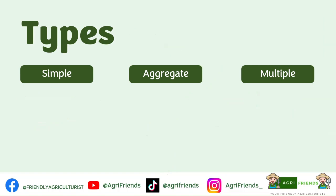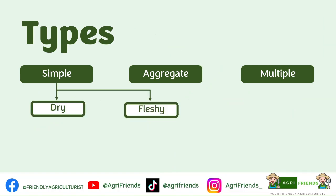In general, there are three types of fruits: the simple, aggregate, and multiple. The simple fruit is further classified into dry or fleshy, while the dry can be further classified as dehiscent or indehiscent.